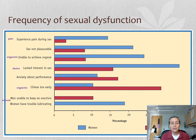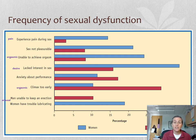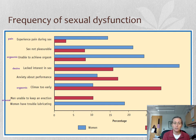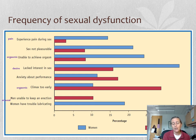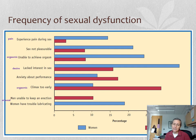Difficulty achieving orgasm is pretty common in female-bodied people, but also affects almost 10% of male-bodied people — that's an orgasmic disorder. Lack of interest in sex is really common in female-bodied people at about 33%, but also not uncommon in male-bodied people at more than 15%. Premature ejaculation or early orgasm is more common in male-bodied people, and we'll talk about that in detail.